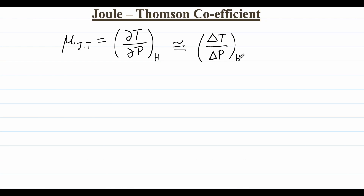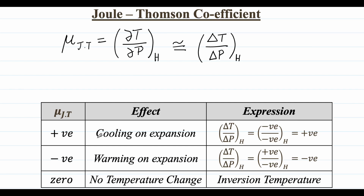Real gases will show different temperature changes as they expand through the porous plug. The Joule-Thompson coefficient can be positive, negative, or zero. For gases that cool upon expansion, the coefficient is positive — a negative temperature change divided by a negative pressure drop. For gases that warm upon expansion, the temperature increases, giving a positive over negative result, so the coefficient is negative. When there is no change in temperature, the Joule-Thompson coefficient is zero, and such a temperature is called the inversion temperature.